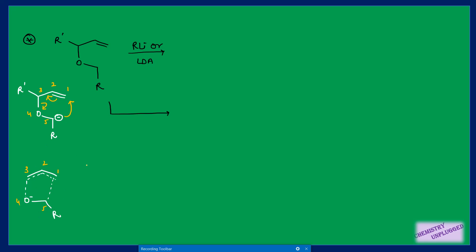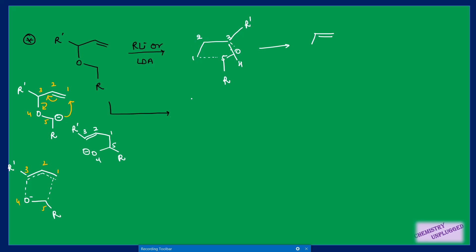We draw the transition state in envelope form. Carbon one, three, and five are arranged with oxygen as the fourth atom. At C3 we have R', drawn in the exo direction away from the cavity, and at C5 we have a proton and an alkyl group R. After bond shifting, the new double bond forms between C2 and C3. With R' in the exo direction, this R' ends up on the E side, giving E-alkene.